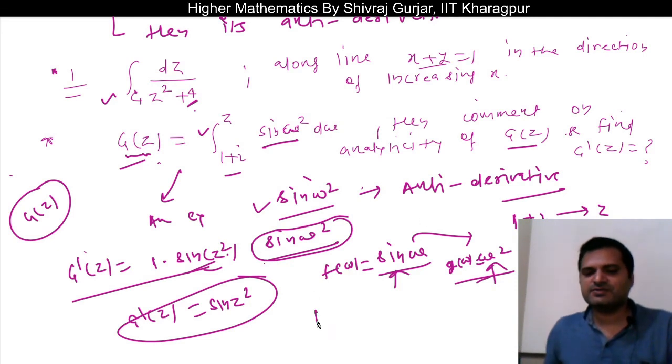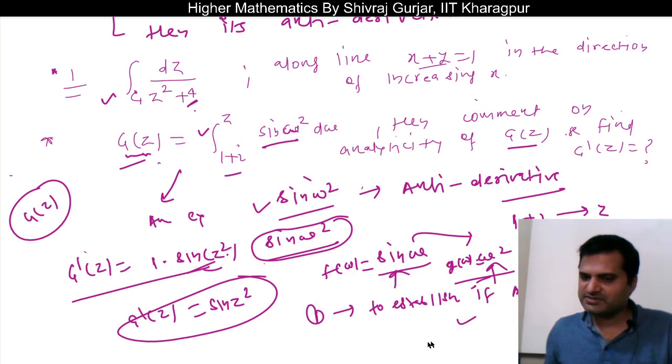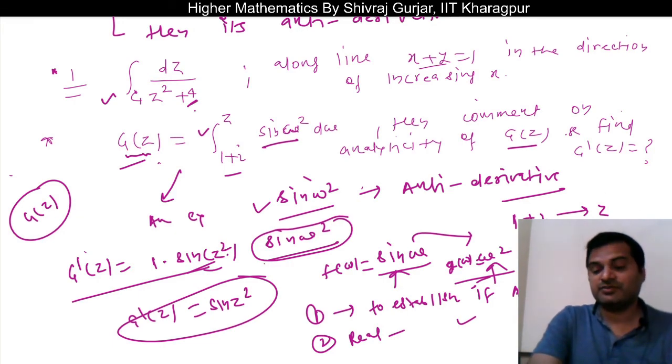So this first step will always be to establish if antiderivative exists or not. Once this is established, if it exists, then simple real calculus we will apply, those concepts. So I hope it's clear.